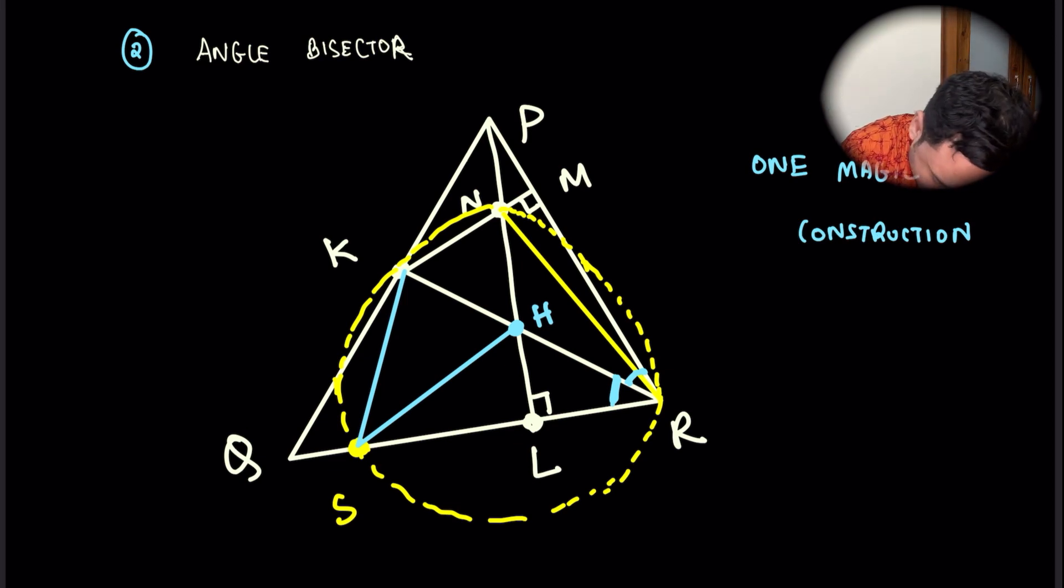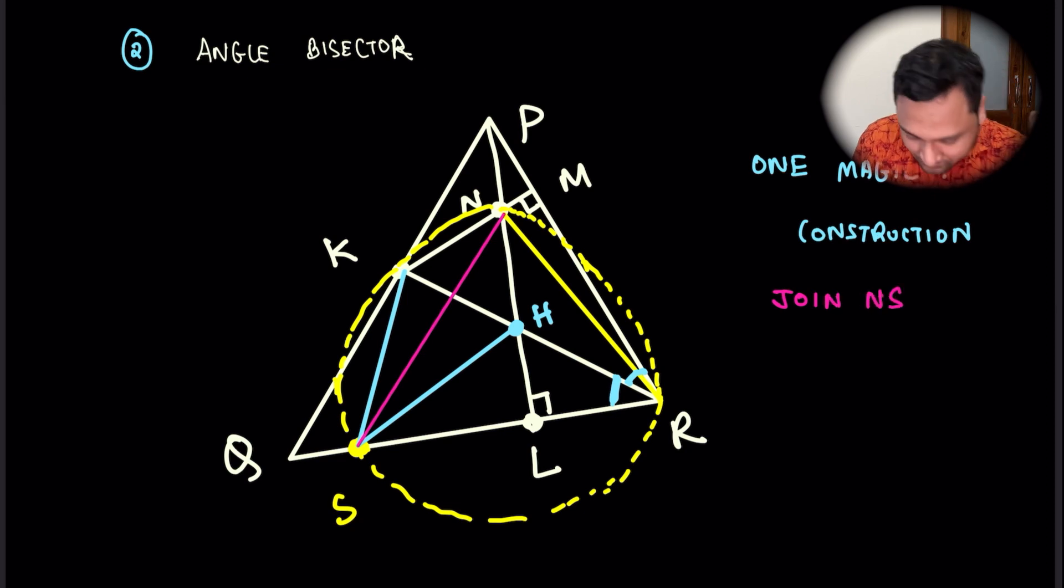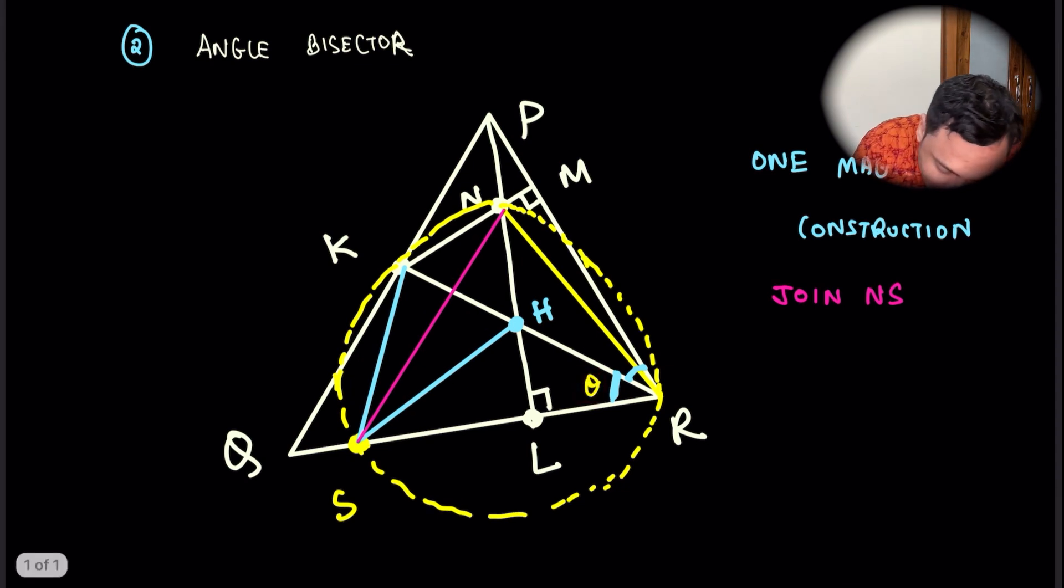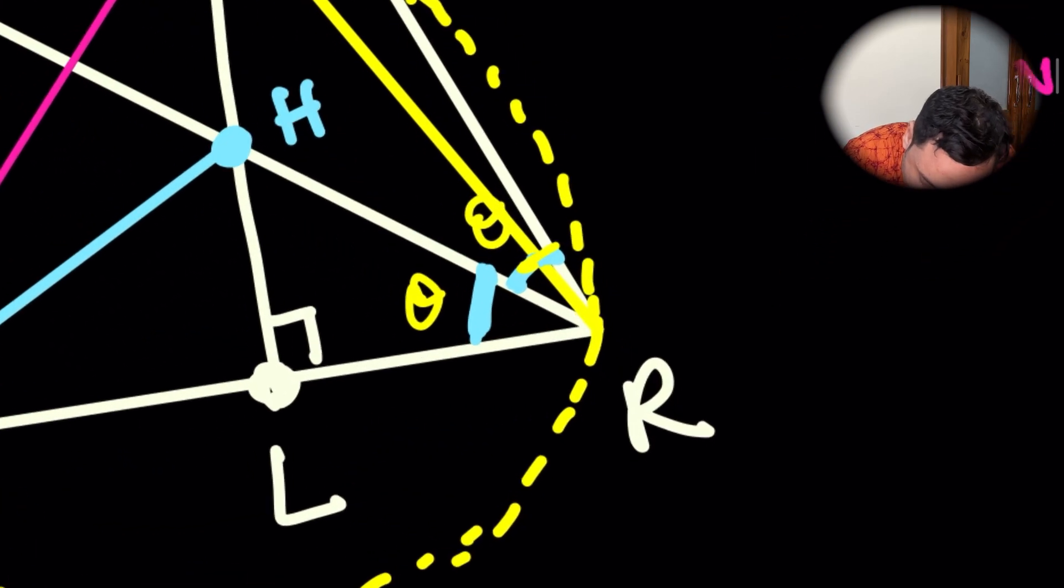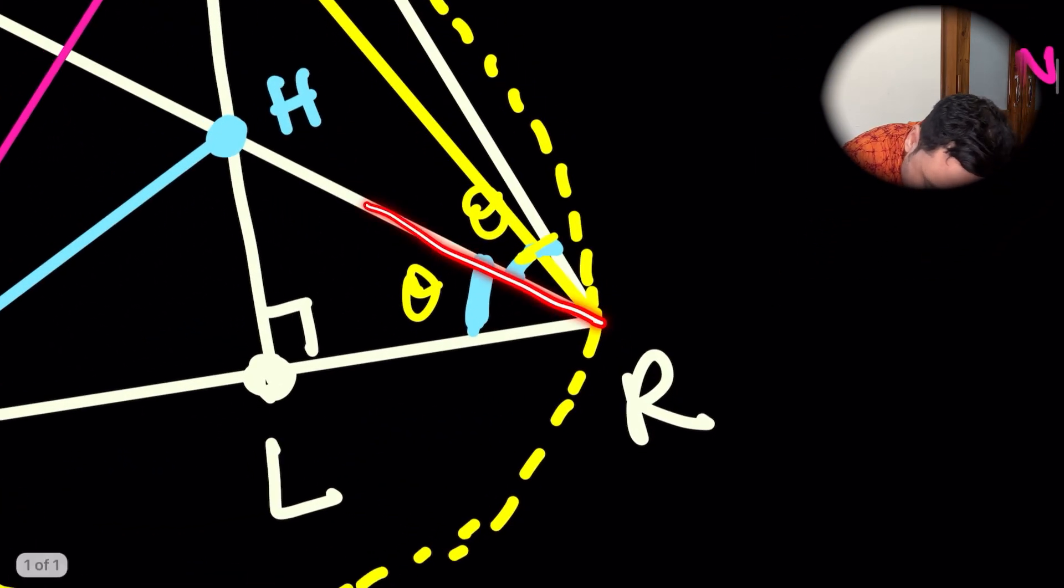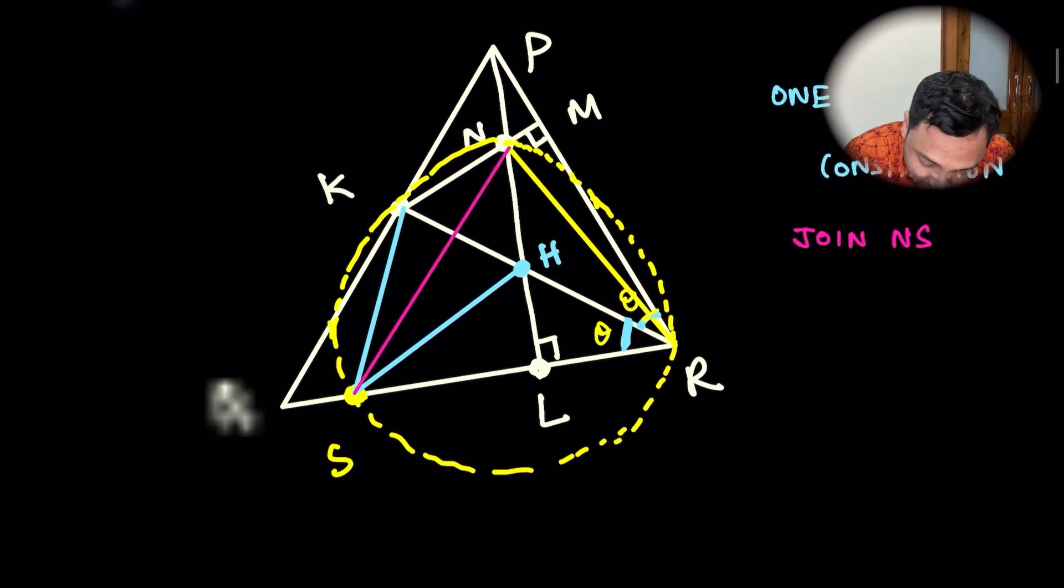So what is that construction? The construction is join NS. If you join NS, suppose this angle here is theta. Now we will do some angle chasing. This angle is theta. Then this angle is also theta because it's an angle bisector. If this is an angle bisector, so if this is theta, then this entire angle is also theta.